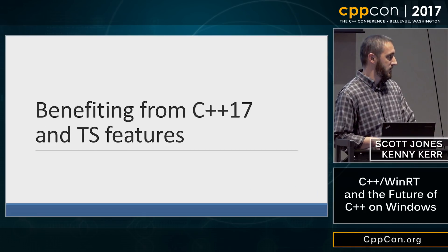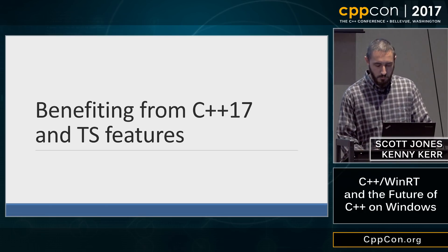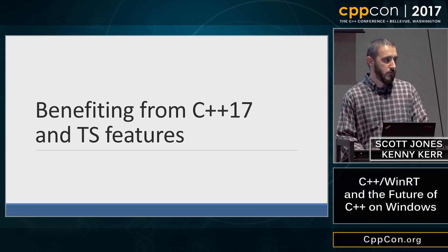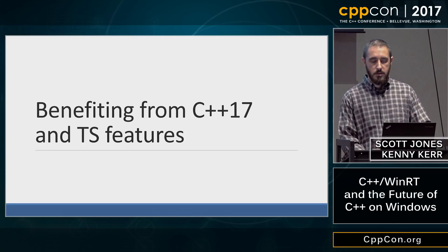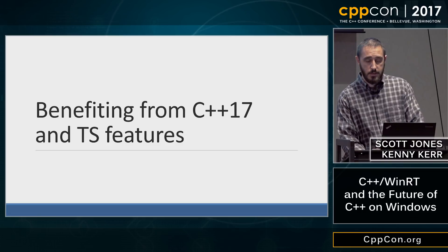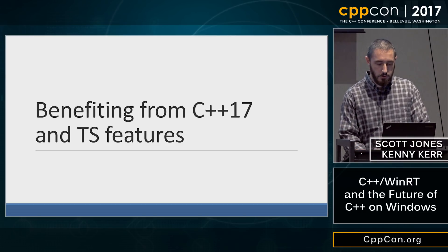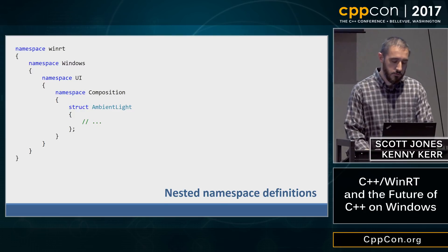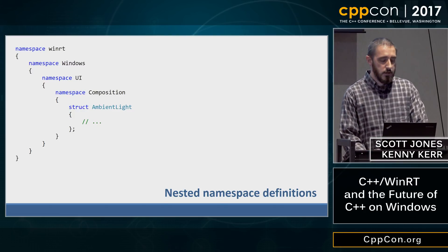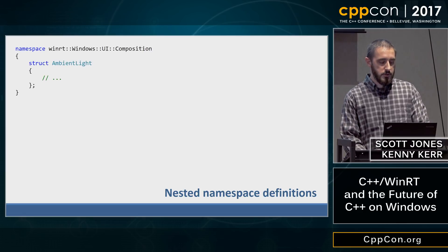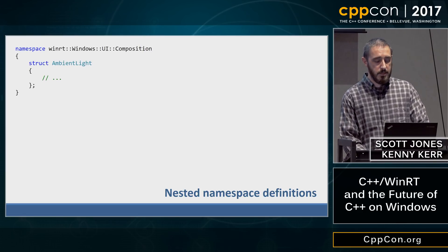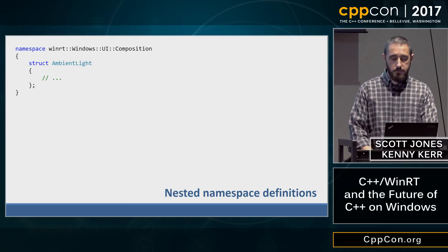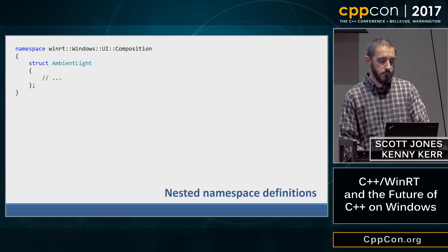Benefiting from C++17. This is CppCon — you've probably seen many ways to benefit from C++17 this week. I want to give concrete examples of how we're doing that within Windows and within this library to solve real problems. There are significant savings we've seen over the last two years as we've picked up more features. One simple example is nested namespace definitions — we picked this up early on and it really turns verbose code into something much more elegant. We use a lot of namespaces and types in the Windows runtime, and this makes our life a lot simpler.